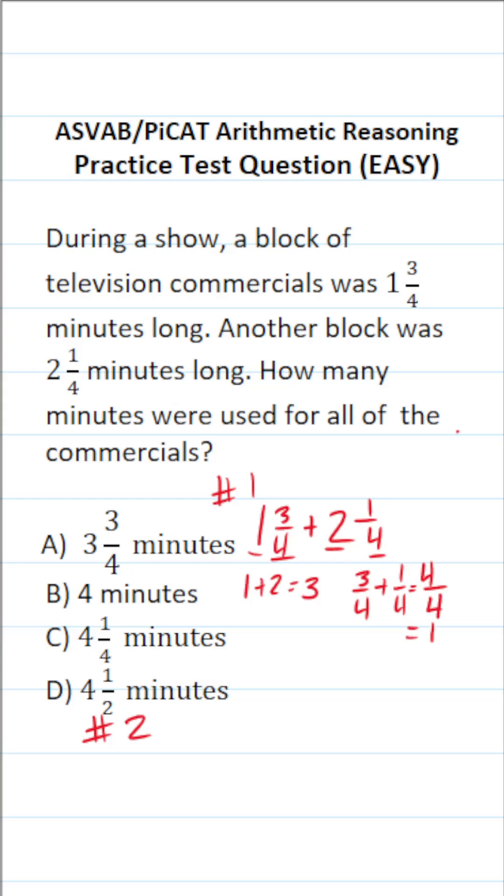So our whole numbers added to three. Our fractions added to one. Three plus one is four. In other words, there were four minutes of commercials. So this one is B.